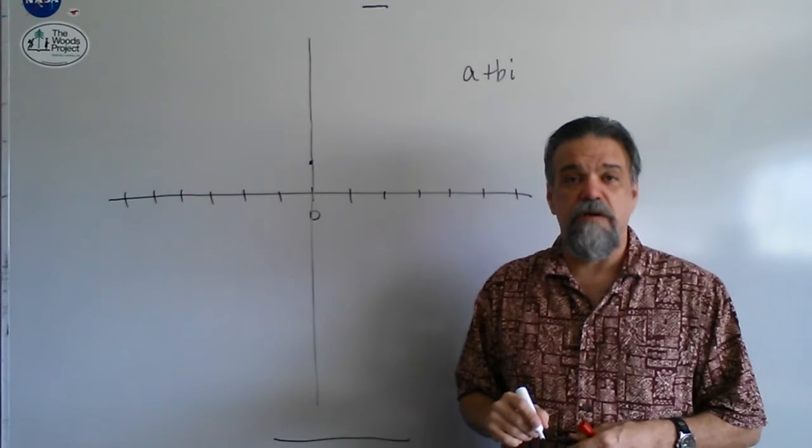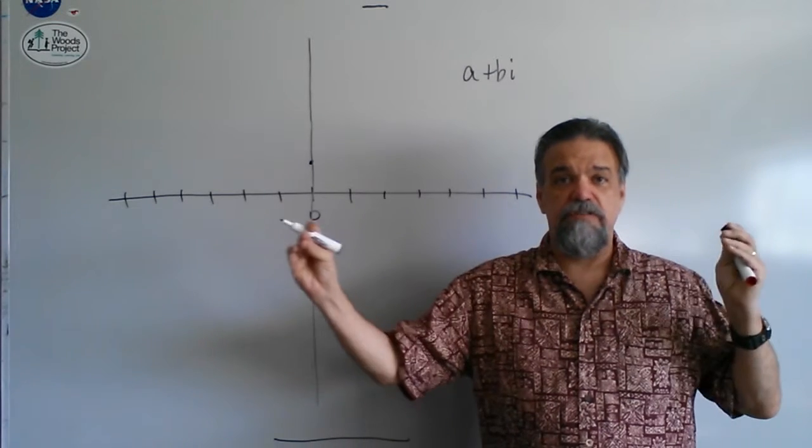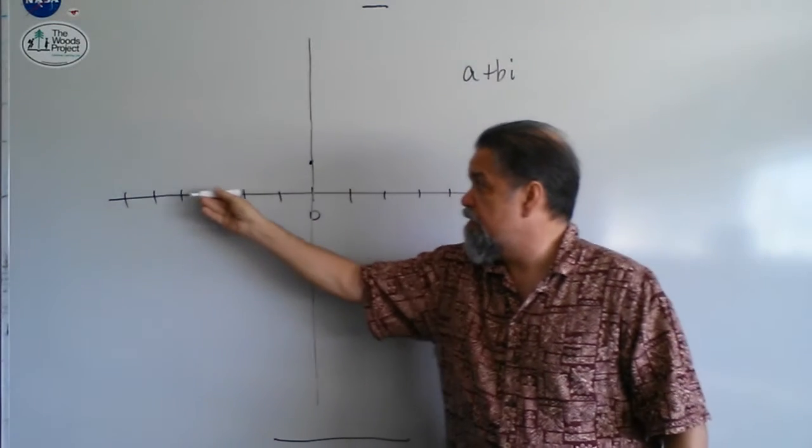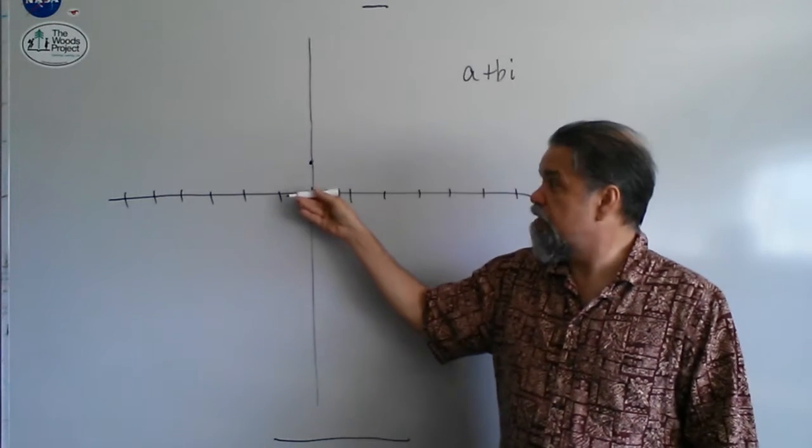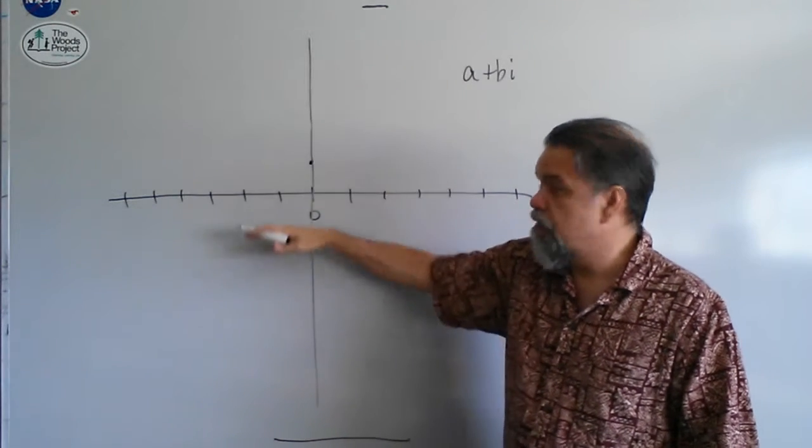So now, when we have complex numbers, we no longer have just a simple number line. This is where the real numbers live, but anything that has an imaginary component is up here or down here.